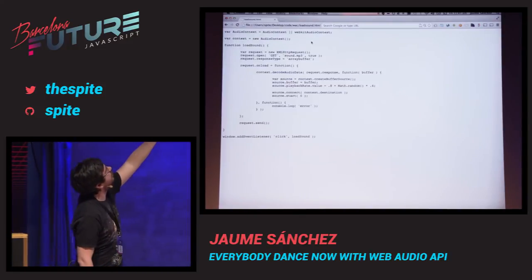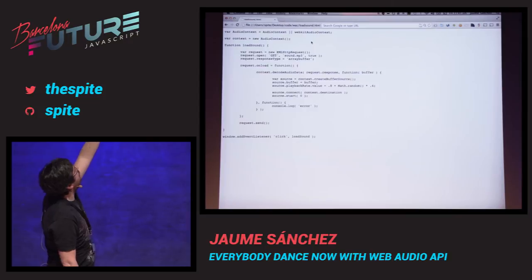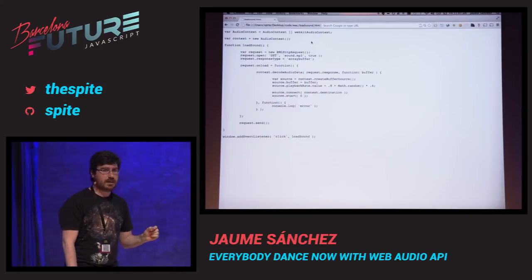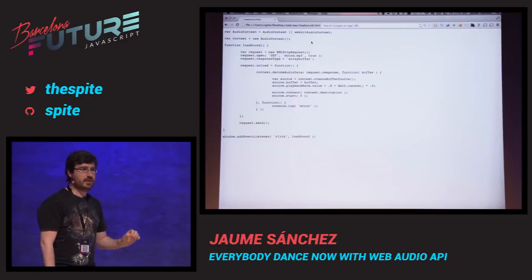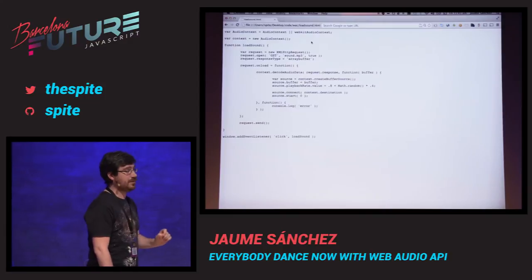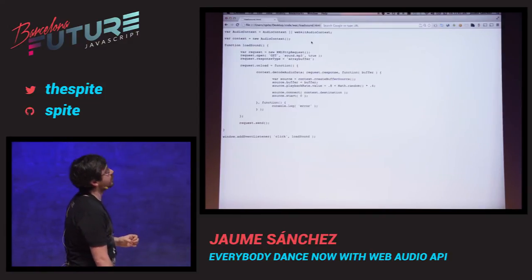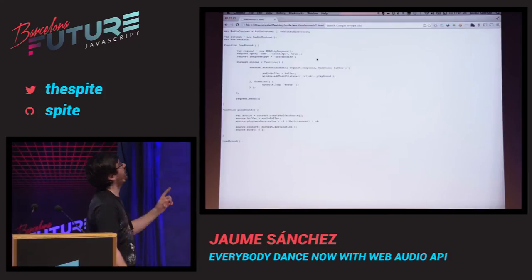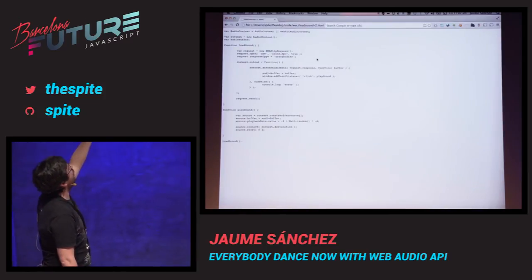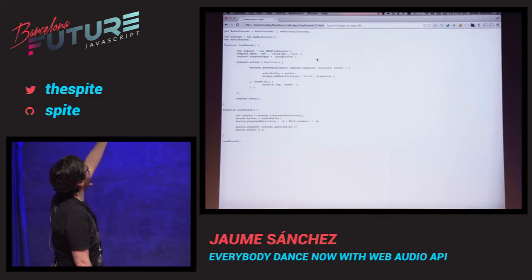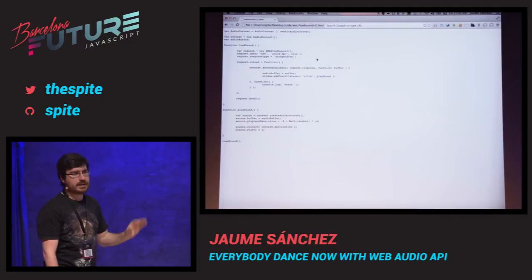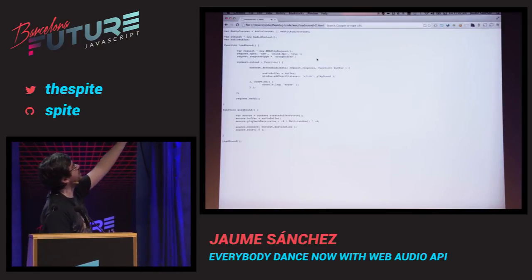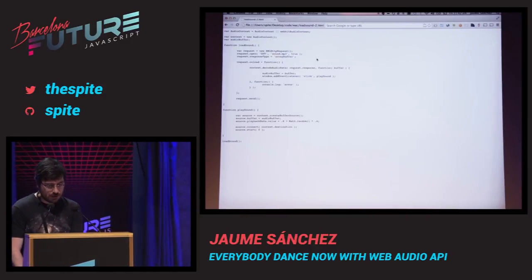There's another thing: you cannot replay an audio buffer source node. Once an audio buffer source node is played, it's done — you cannot play it again, it will throw an exception. So you have to keep the buffer and recreate your source node, then play it again. A more convenient way of managing sounds is having a function that stores the buffer into an audio buffer, and then a playSound function which creates the buffer source and plays it, reusing the audio buffer.